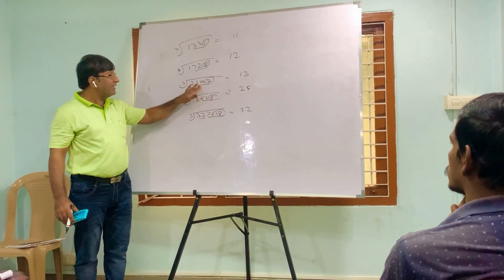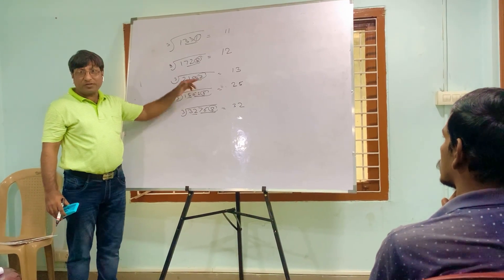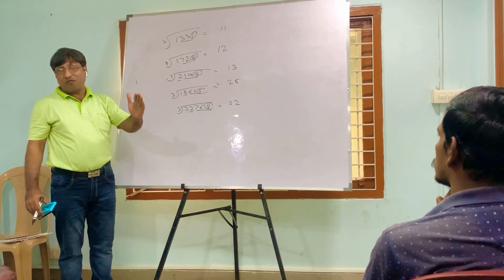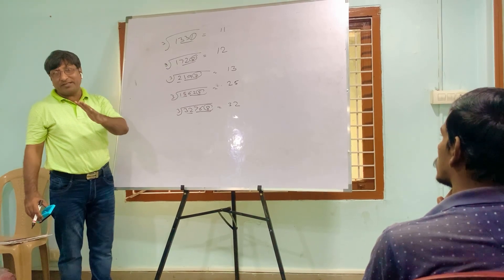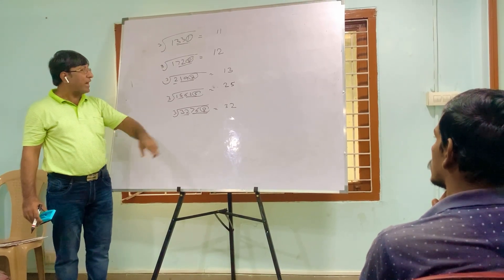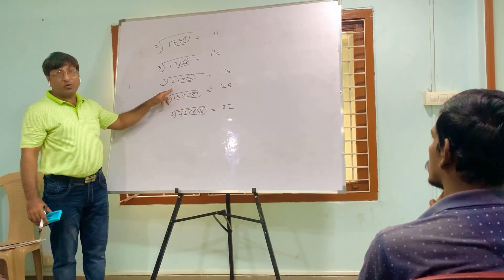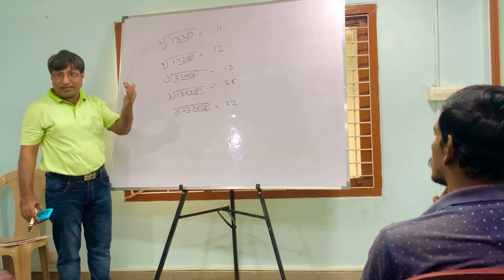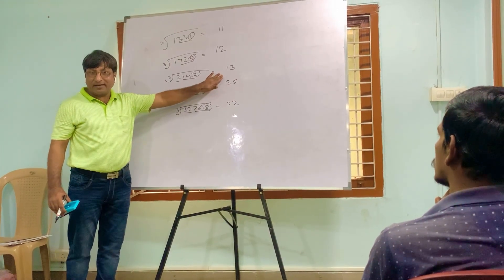For a number ending in 7: group of 3 digits, unit 7. Multiply 7 three times: 7 × 7 = 49, unit 9; 9 × 7 = 63, unit 3. Write 3. Left number is 2: 1³ = 1, 2³ = 8 which is greater, so take 1. Answer is 13.